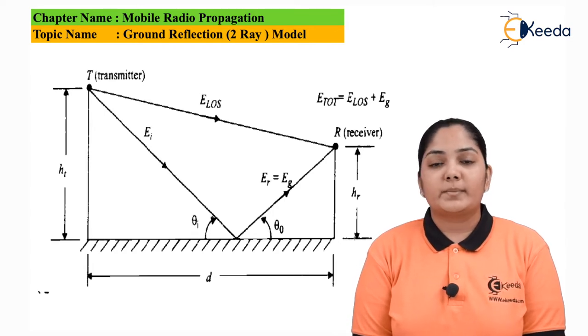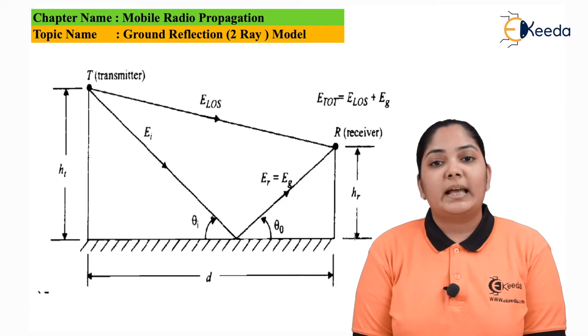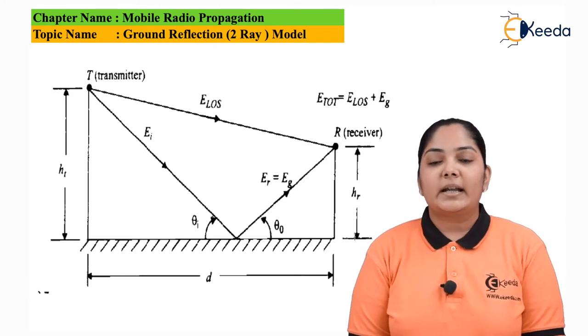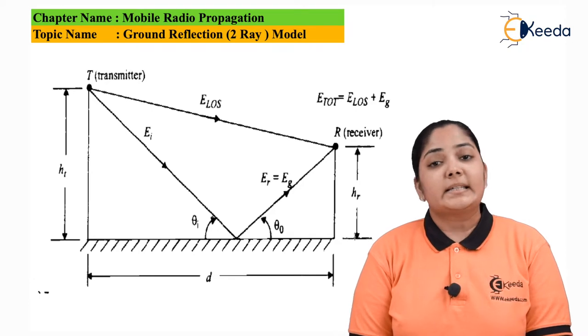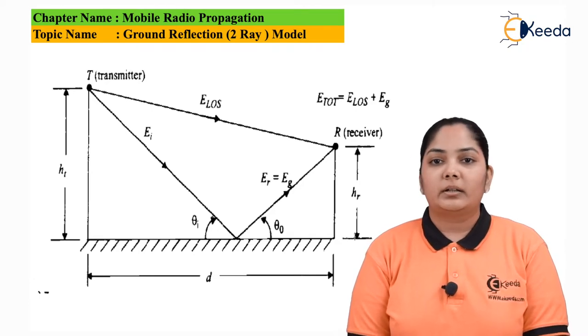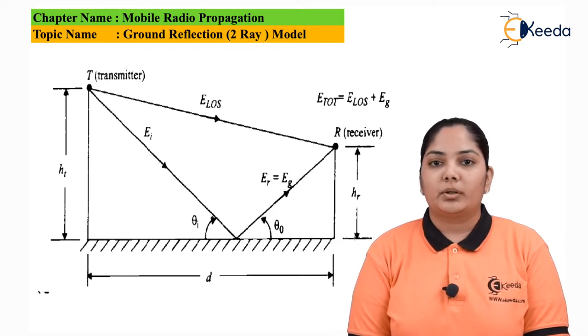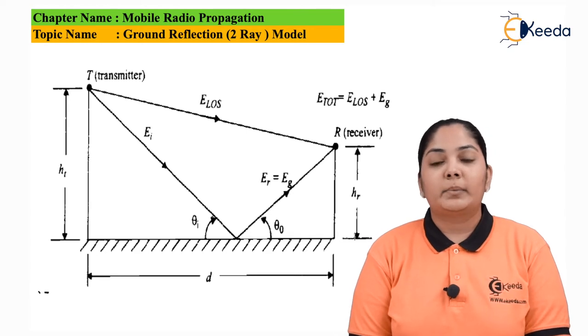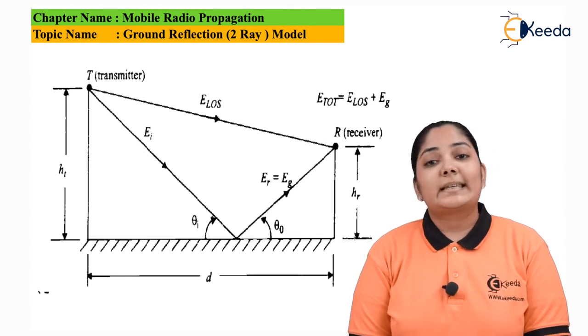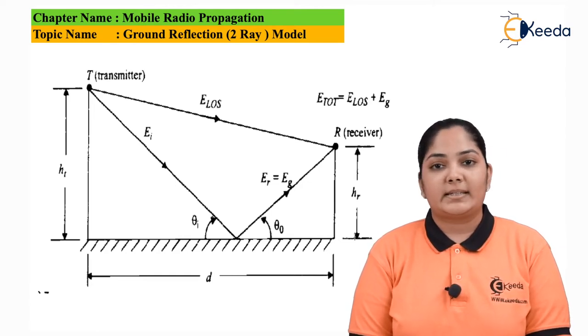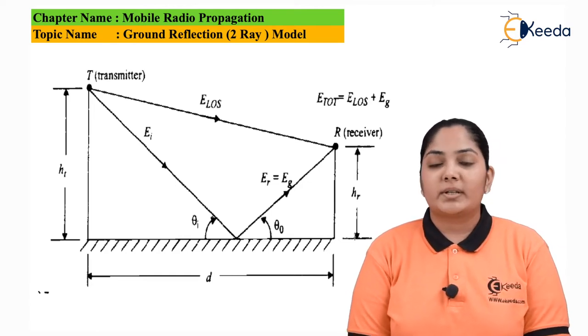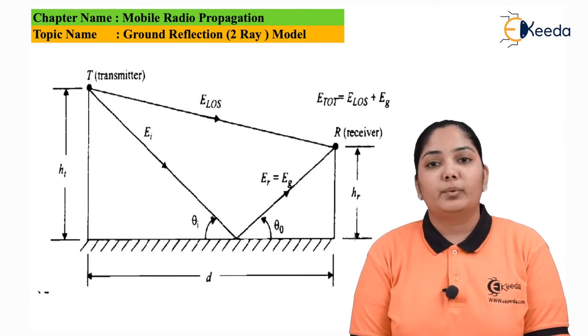There are two waveforms that have been seen. First is the ELOS which is the line of sight through which the electromagnetic waves is traveling. Second is the incident wave which is getting reflected towards the ground and it is getting received at the receiver side. What we are finally interested in is the equation that is written near the receiver which is called as E total. This E total is nothing but the line of sight waveform plus the reflected waveform that we are receiving. At the receiver we are going to receive the total or a combination of both of these.